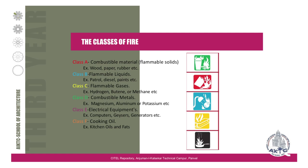What are the classes of fire? If we don't know the types or classes of fire, we cannot control it, because it matters what material or fuel is the key source. There are a few classifications given by fire safety measures. Class A involves combustible materials — flammable solids such as wood, paper, and rubber. If a fire is generated by these kinds of combustible or flammable solid materials, it comes under Class A.